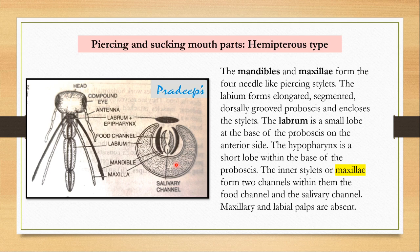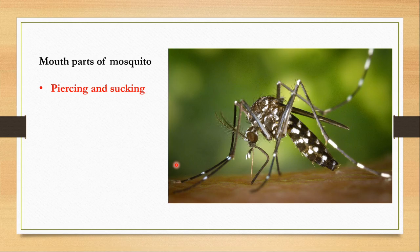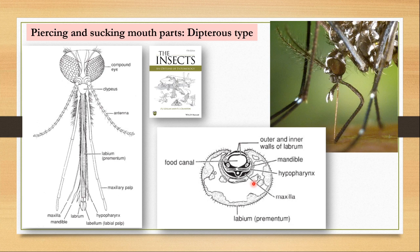Now let's talk about the mouthparts of the mosquito. In hemipterans, the piercing and sucking mouthparts draw liquid from a plant source. In dipterans, they are used to draw blood from animals. Here, unlike hemipterans which had four stylets, there are six stylets: the two maxillae, the two mandibles, the labrum, and the hypopharynx. You can see the two maxillae, two mandibles, elongated maxillary palps, hypopharynx, and labrum, all of which are stylet-like.